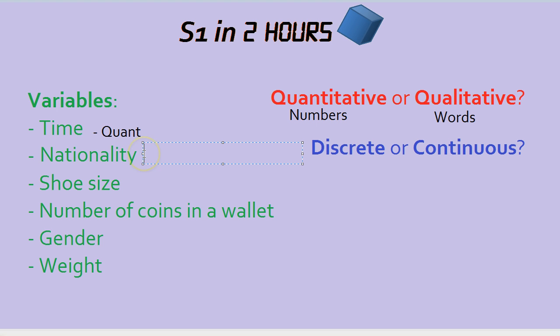For nationality, you would need a word, you can't say I'm nationality 6, so it's qualitative.